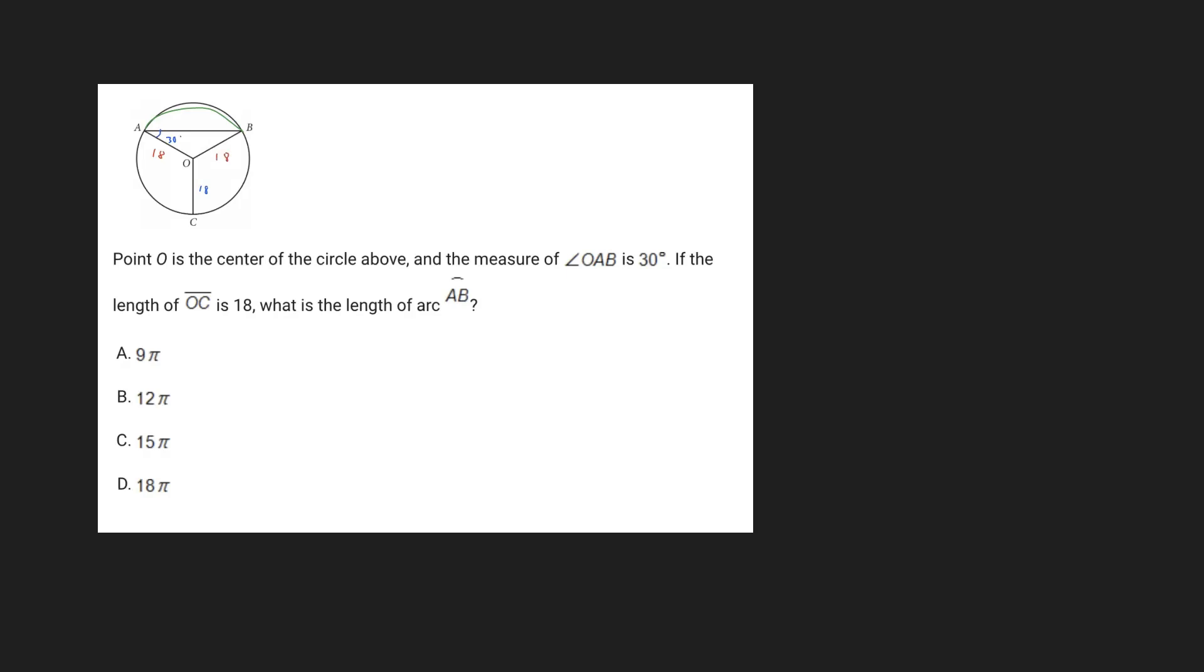Now here's what's interesting. Because these two side lengths are equal, we know their opposite angles are also going to be the same. And so if this 30 degree angle is opposite of 18, we know that this angle right here is also going to be 30 degrees.